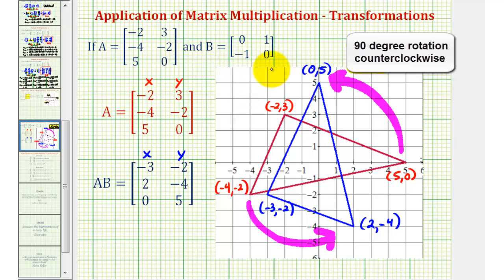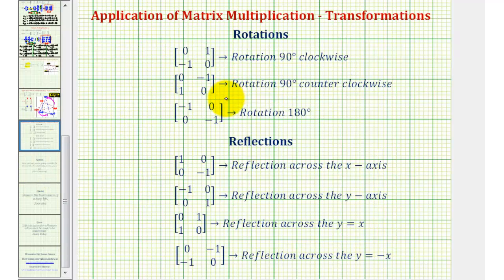There are many different matrices we can multiply by to perform a variety of transformations. We'll finish by showing a list of several of these. Multiplying by any of these three matrices will perform the following rotations, and multiplying by any of these four matrices will perform the following reflections.